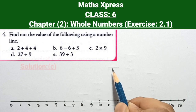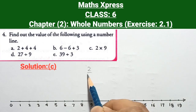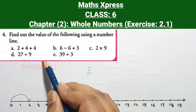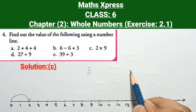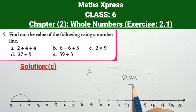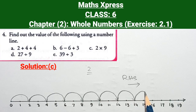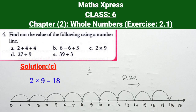Question C: 2 × 9. We start at 2, then move 2 points 9 times towards the right hand side since both are positive. Moving 2 points 9 times brings us to 18. Therefore, 2 × 9 = 18.